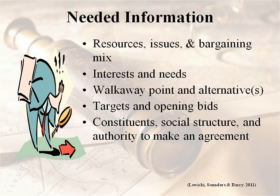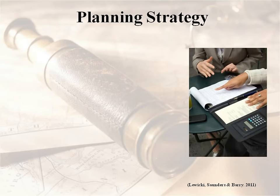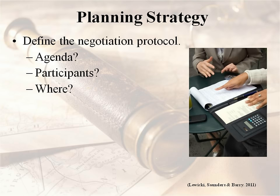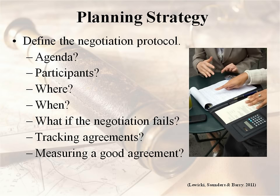Know who the constituents and parties are, the social structure, and who has the authority to make an agreement — if the people with authority aren't at the table, that's something you need to work on. Know the reputation of the other party and their negotiation style, as well as the likely strategy and tactics they might take and which ones you're going to take. You also need to define the negotiation protocol: what's the agenda, who's going to be there, where will it occur, and what is the time period? A negotiation rarely concludes in one session — will you meet bi-weekly, and how long will it take completely? What happens if the negotiation fails? How will you keep track of what's agreed to, and how do you know whether you have a good agreement? Sort through all these issues before you get to the table and be continually adjusting.